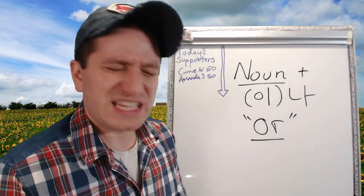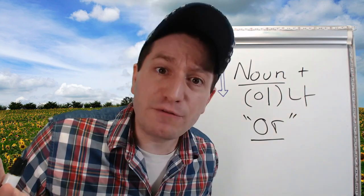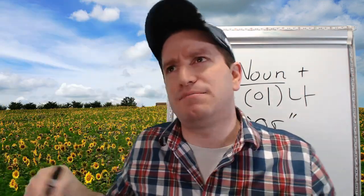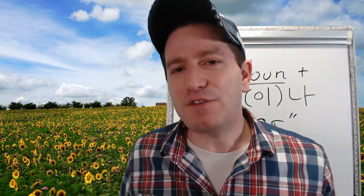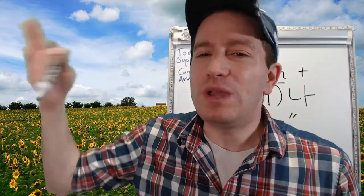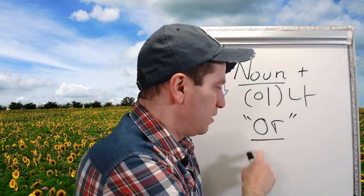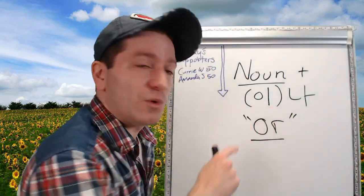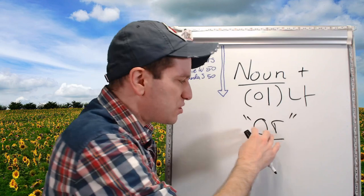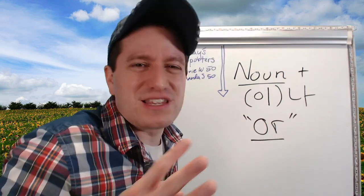이나 means 'or' when the speaker doesn't really have a preference — it means 'I'm going to go see a movie like, I don't know, Lord of the Rings or Star Wars, or maybe nothing, or maybe both.' In Korean, you don't change the way you say it; you simply change the grammar. So if you want to convey 'or' when it doesn't really matter, when you don't have a preference, this is the grammar form to use. It means 'or,' but only when the speaker doesn't have a preference — you can think of it as 'or something' or 'or maybe somewhere.'